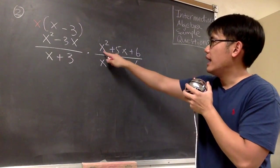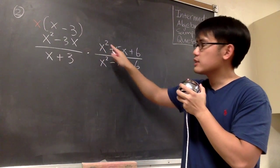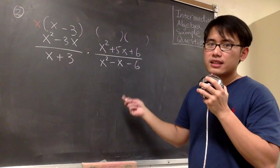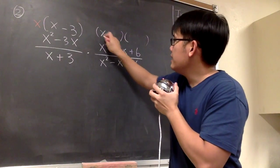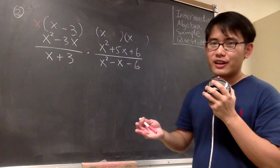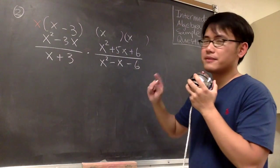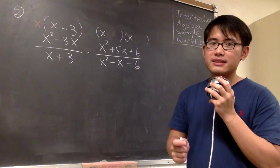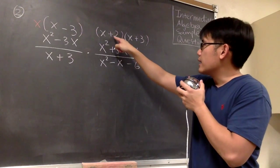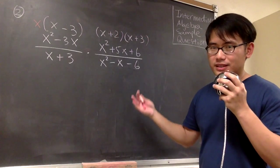Now let's move to the trinomial x² + 5x + 6. To factor this trinomial, whenever we have a 1 in front of the x², we first open two parentheses and put x times x to get x². Then we look at the number positive 6 and ask: what times what gives us positive 6, while those two numbers also add up to positive 5? The correct choice is positive 2 and positive 3, since 2 times 3 equals 6 and 2 plus 3 equals 5.